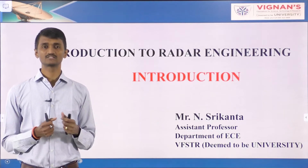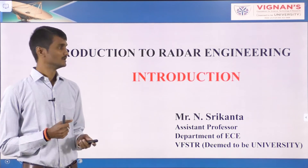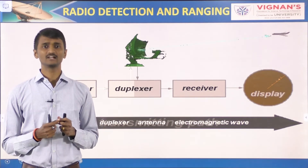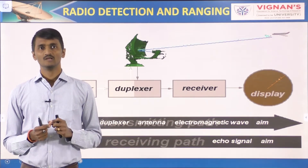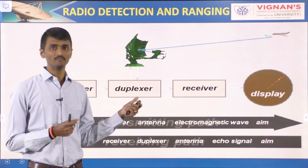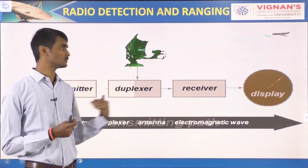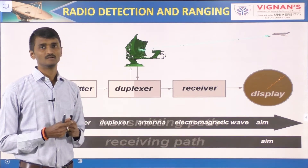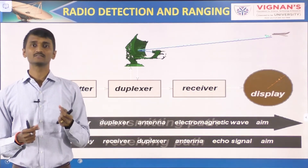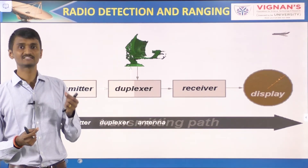Moving target indication (MTI) radar. Coming to the introduction — radar is an electromagnetic system for the detection and location of objects. It operates by transmitting a particular type of waveform, for example a pulse-modulated sine wave, and detects the nature of the echo signal. Radar is used to extend the capability of one's senses for observing the environment, especially the sense of vision.